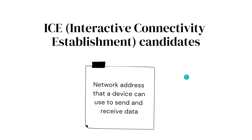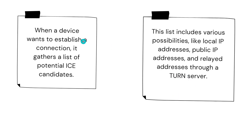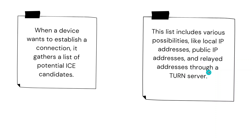So that is ICE in the simplest terms. Now, whenever a device is going to establish a connection with another device, it needs to have a list of all the ways in which it can communicate with the other device. That is what we call potential ICE candidates — the ways in which two devices can connect with each other. This list can include connecting over a local IP address, a public IP address, or even a relayed address through a TURN server.